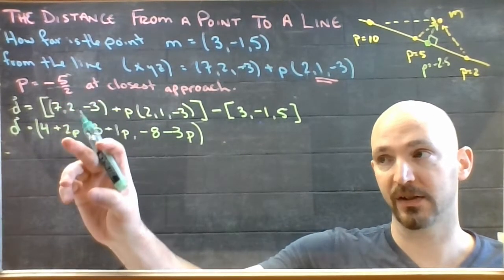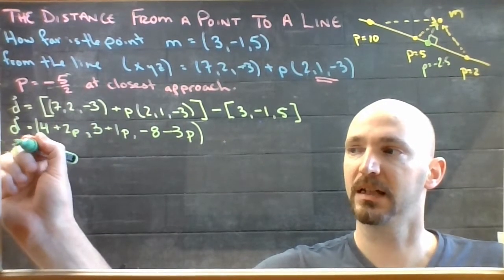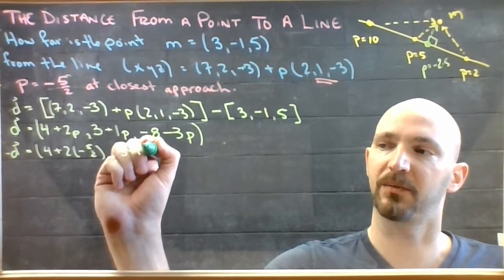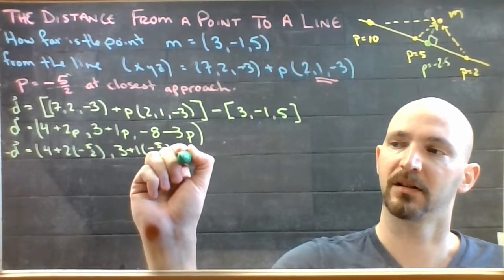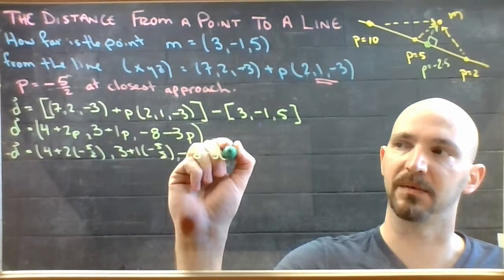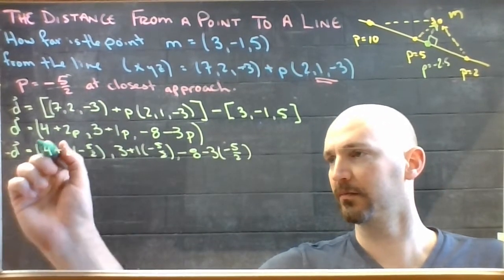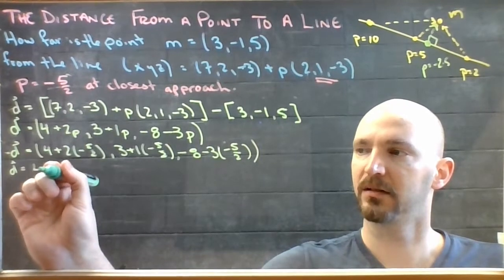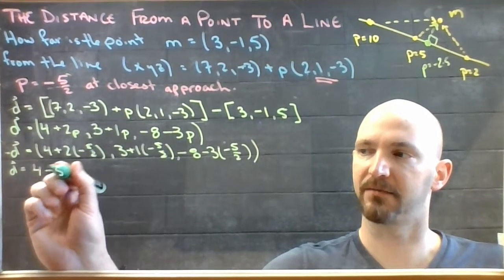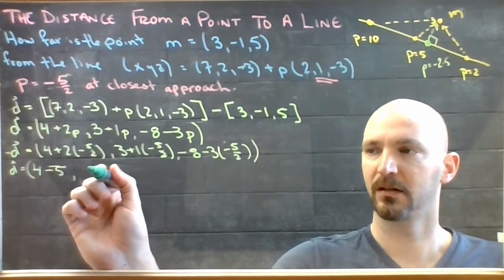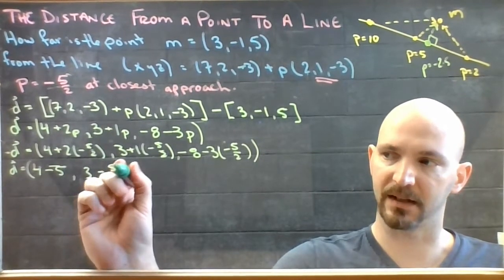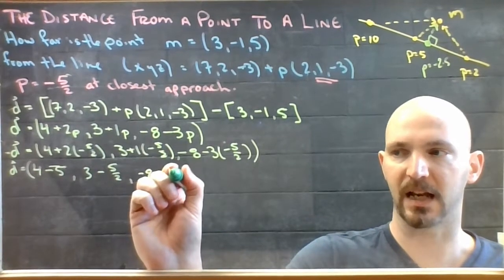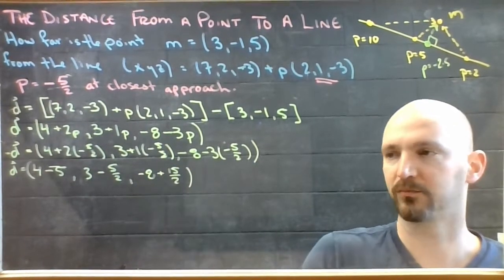So D is 4 + 2(-5/2), comma, 3 + 1(-5/2), comma, -8 - 3(-5/2). So D will be, 2 times -5/2 is -5, 1 times -5/2 is -5/2, -3 times -5/2 would be 15/2.